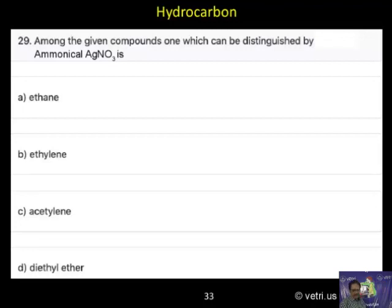Question 29: Among the given compounds, one which can be distinguished by ammonical silver nitrate. Functional group test, I have given already this.